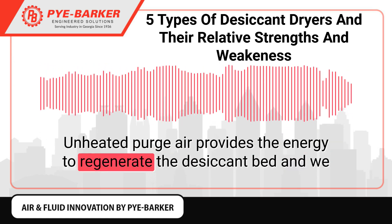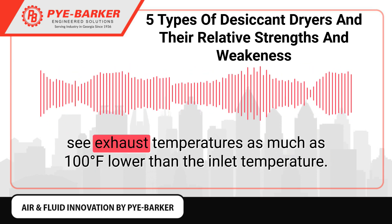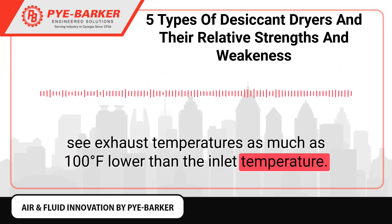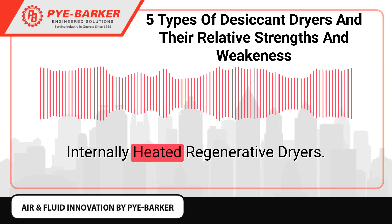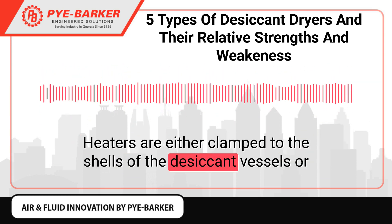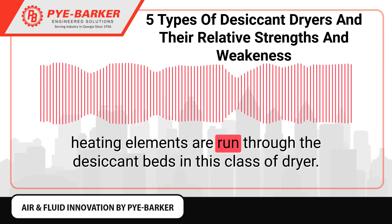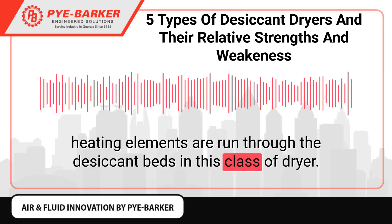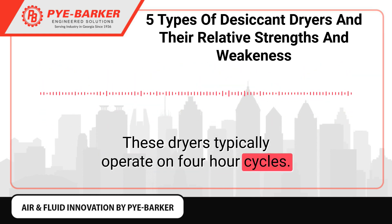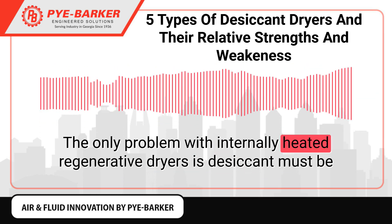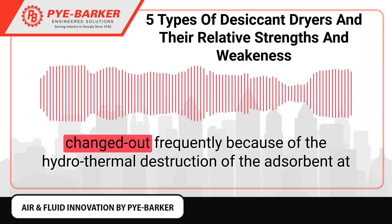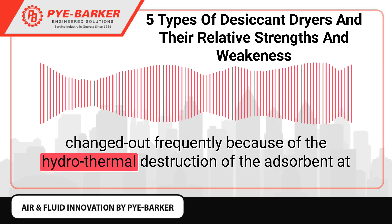Unheated purge air provides the energy to regenerate the desiccant bed, and exhaust temperatures can be as much as 100°F lower than the inlet temperature. In internally heated regenerative dryers, heaters are either clamped to the shells of the desiccant vessels or heating elements are run through the desiccant beds. These dryers typically operate on four-hour cycles. The main drawback is that desiccant must be changed out frequently due to hydrothermal destruction of the adsorbent at elevated temperatures in moist environments.